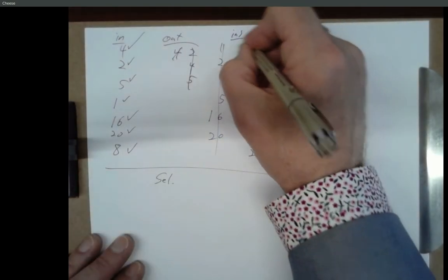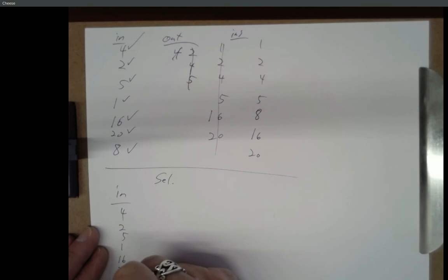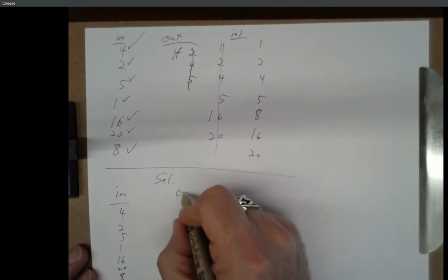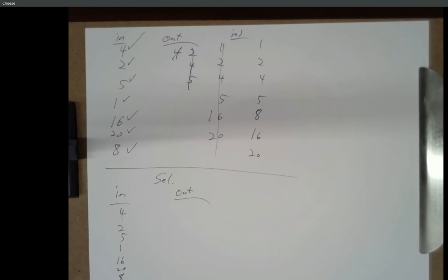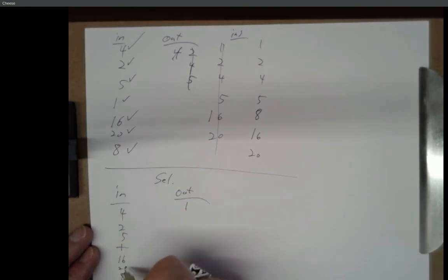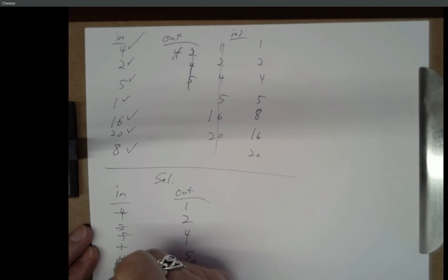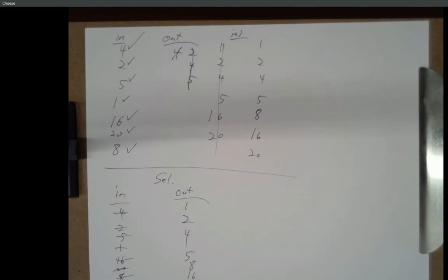Selection sort: you've got your input, you've got your output. This says choose what you're going to take from the input in sorted order — select in sorted order, as opposed to insert in sorted order. Go through, find the smallest number — looks like a 1, that's the first element in the output. Find the smallest number now — looks like a 2, that's next. Find the next smallest — that's a 4. The next number is 5, and so on. I think of it as where are you doing the work: with insertion you're doing the work when you insert into the output; with selection you're doing the work when you select from the input.